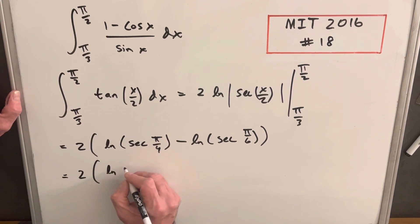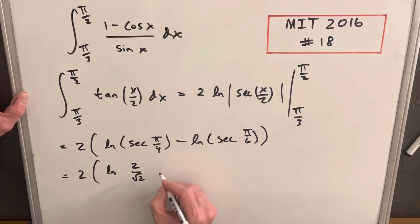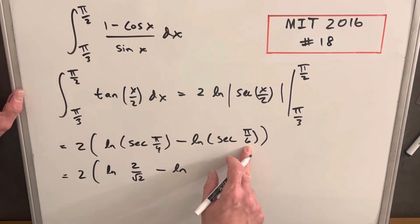Evaluating this, we're going to have our ln secant at pi over 4. That's going to be 1 over cosine pi over 4. Cosine pi over 4 is square root of 2 over 2. So we have here 2 over square root of 2, just taking the reciprocal. Similar here, cosine of pi over 6 is square root of 3 over 2. We'll take this reciprocal, and we'll have 2 over square root of 3.